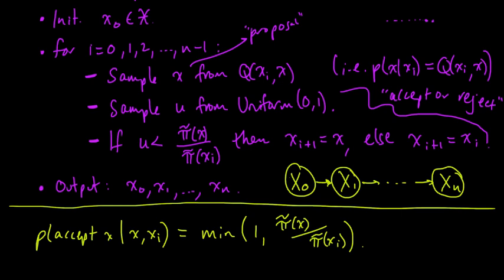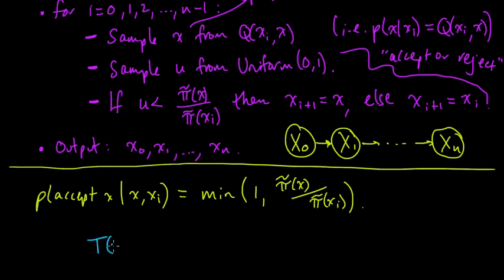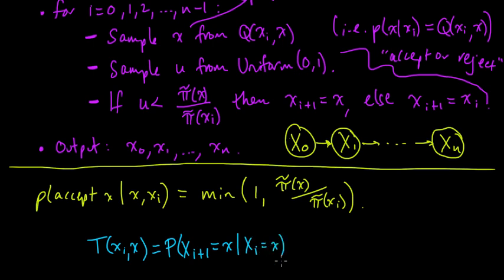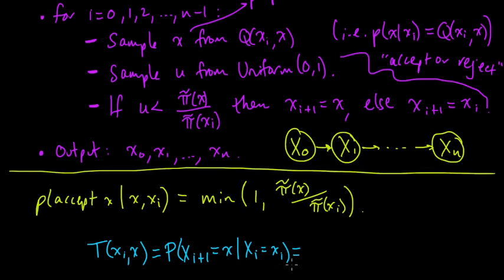The first thing we need to do is get our hands on the transition matrix in order to understand this Markov chain. Let's think about the entry T(xi, x) — that is, the probability that X_{i+1} equals x given that X_i equals xi. There are two ways for X_{i+1} to take a particular value: we sample a value and either accept it, so X_{i+1} takes that sampled value, or we reject and X_{i+1} equals X_i.